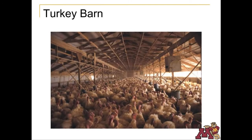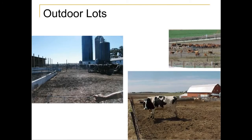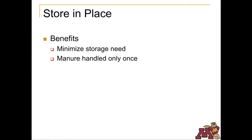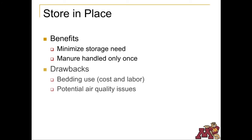Most broilers and turkeys are raised on solid floors bedded with wood shavings. Portions of the barn are cleaned between flocks and more bedding is added. The partial cleaning removes manure buildup around the animal's food and water area. Manure can also be stored on open concrete or dirt lots with no bedding. Cleaning frequency can vary from once a day on concrete to a few times each year in open outside lots. Store-in-place manure systems don't require a separate storage structure, and in most cases the manure is only handled once, provided there is cropland available at the time when the manure must be hauled out. The expense of extra bedding and extra labor is one drawback. Good ventilation is also needed to help remove moisture and gases that result from the manure and bedding as they decompose.